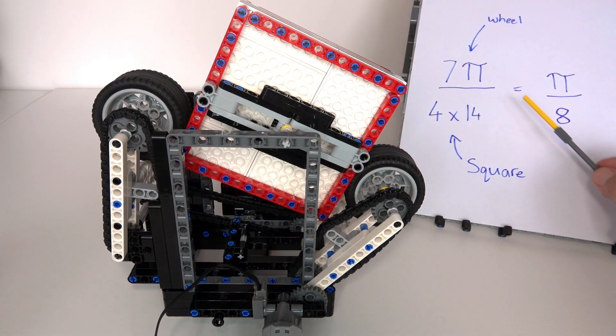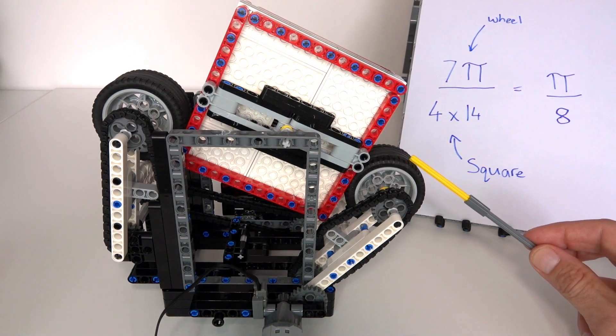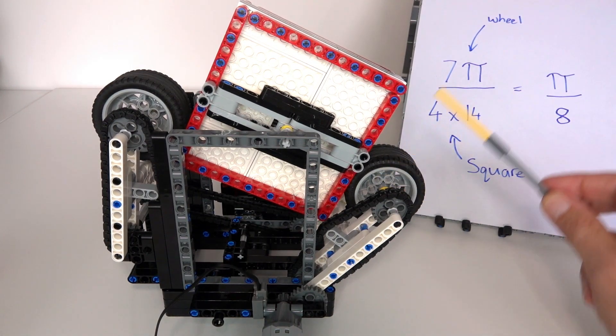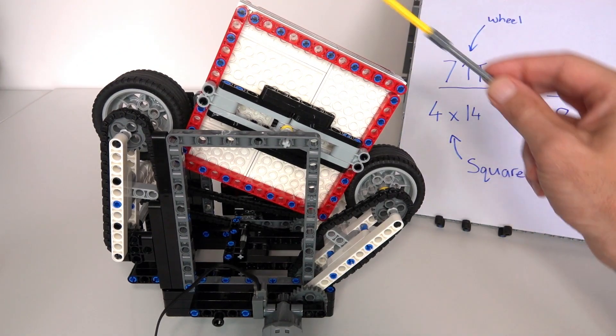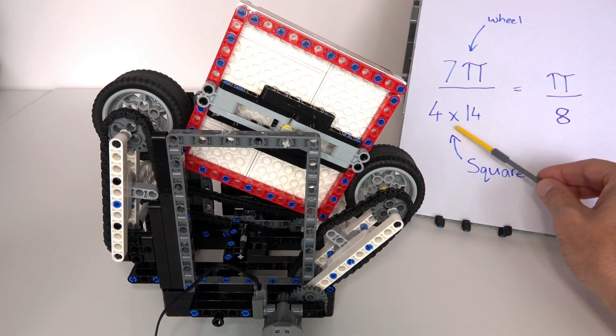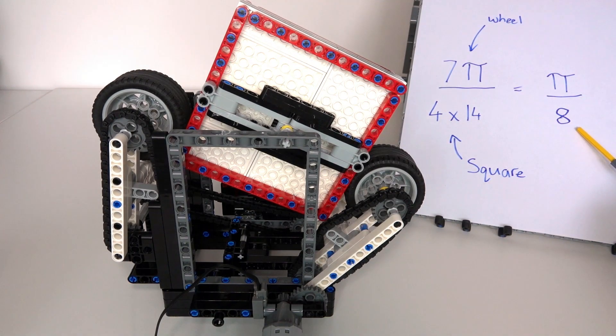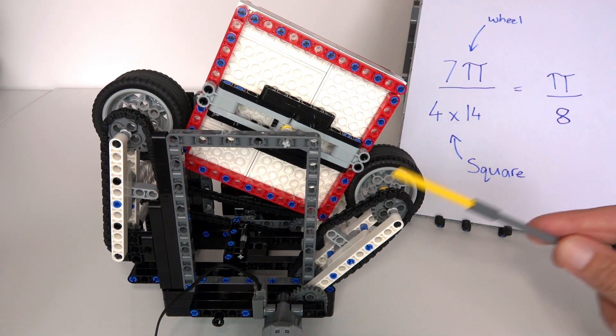If we draw it up here and do the simple math, we've got seven times pi, which is this wheel here—that's seven units—and that is driving another wheel which is four sides times 14 units, giving us pi over eight. That is a very good pi ratio: pi over eight.